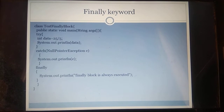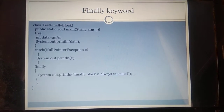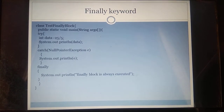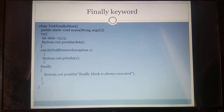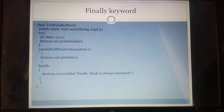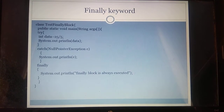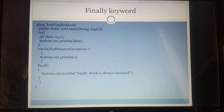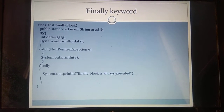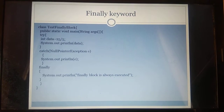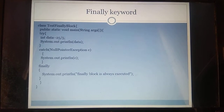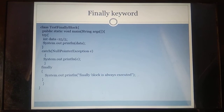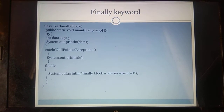After the try block, we have a catch block. If an exception occurred, the exception object e — of type NullPointerException — would be printed. After the catch, we have the finally block, which simply prints 'finally block is always executed'. Since there is no exception in this program, the output is: first 5 (result of 25/5), then 'finally block is always executed' from the finally block.